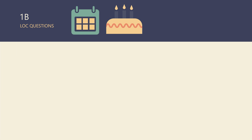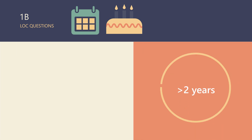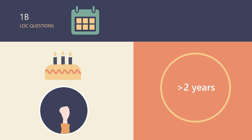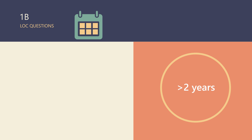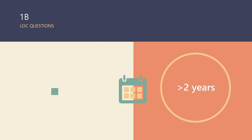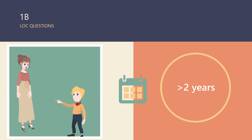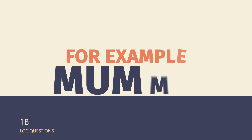As an alternative for the question about their age, children aged two years and up can be asked to show the correct number of fingers for their age. Instead of the question about the current month, the child can be asked to point to a named parent or other familiar family member present. Use the name for that person which the child typically uses, for example, mummy.